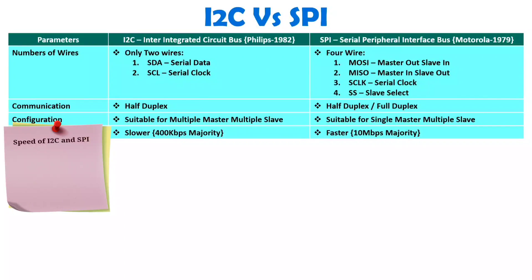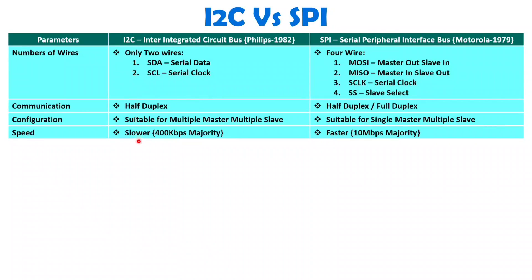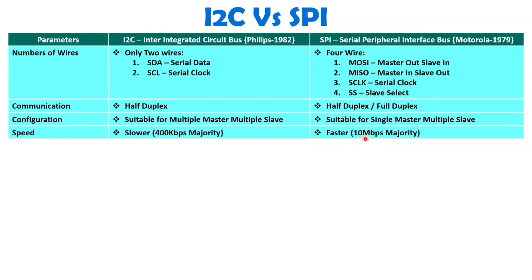When we talk about speed, SPI has the advantage. I2C has slower speed — in the majority of cases you will have 400 kbps at maximum. With SPI, you have higher speed, and in the majority of devices it supports up to 10 Mbps.